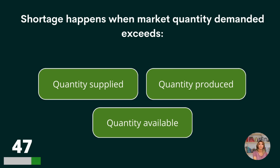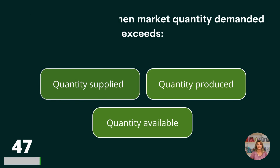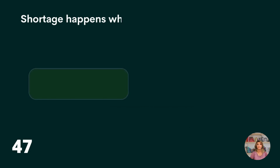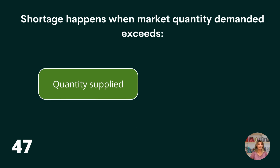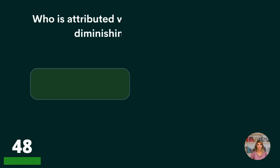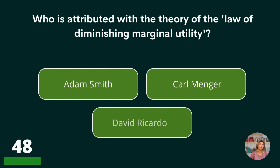Shortage happens when market quantity demanded exceeds quantity supplied, quantity produced, or quantity available? Quantity supplied.